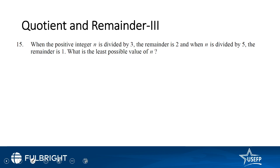The multiples of 3 are 3, 6, 9, 12 and so on. If we add 2 to every multiple, we get numbers that give remainder 2 when divided by 3: that gives us 5, 8, 11, 14. Now when n is divided by 5, the remainder is 1, so the candidates from the five-times table plus 1 are 6, 11, 16 and so on.